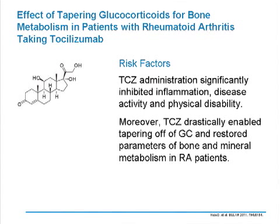Another item on glucocorticoids was a study from Japan looking at patients with rheumatoid arthritis treated with tocilizumab. They showed that tocilizumab administration significantly inhibited inflammation, disease activity, and physical disability. They especially examined the possibility of reducing glucocorticoids during this treatment, and showed that at the same time they reduced glucocorticoids, they restored parameters of bone and mineral metabolism in patients with rheumatoid arthritis.